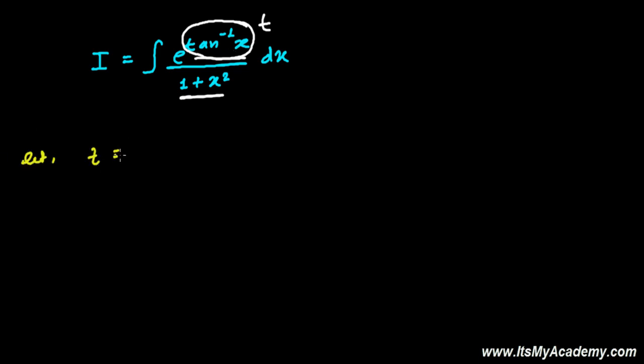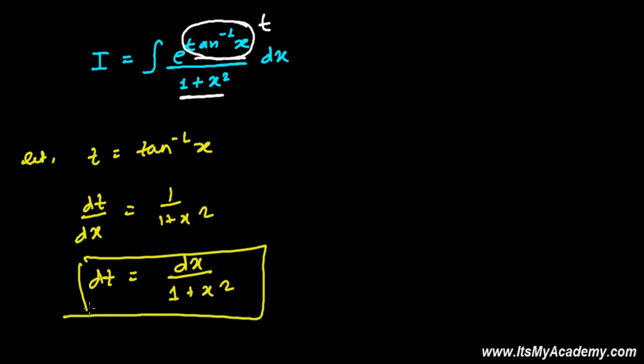So I'm just supposing t equals to tan inverse of x and then derivative of this, dt over dx, is going to be 1 over 1 plus x squared. Therefore, dt equals to dx over 1 plus x squared. And here is a very good relationship.